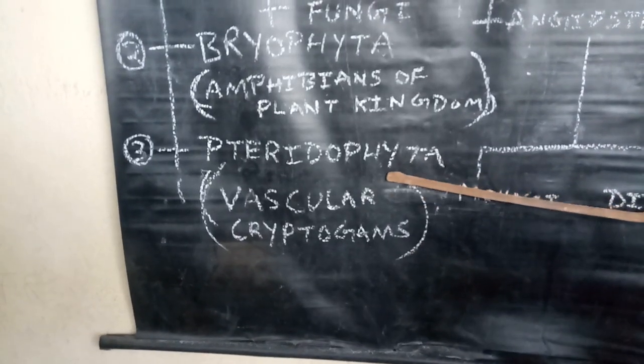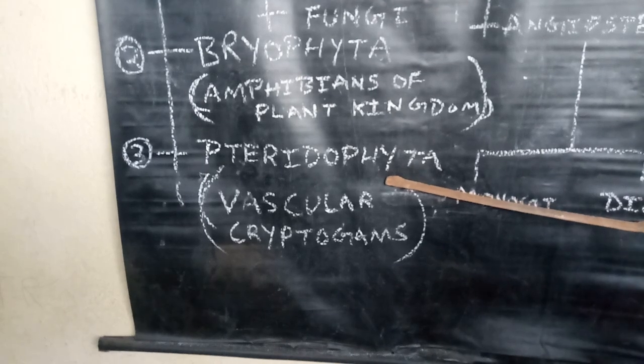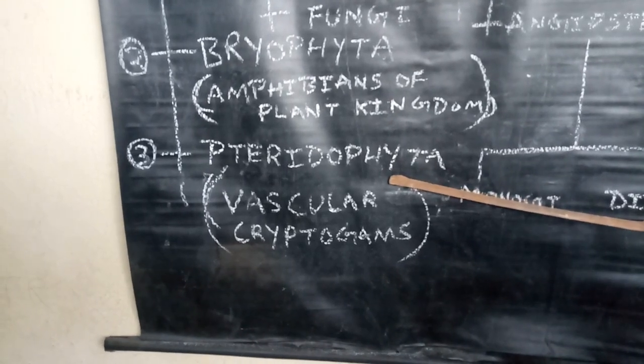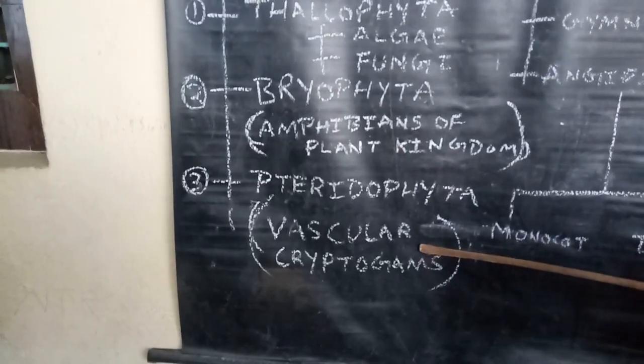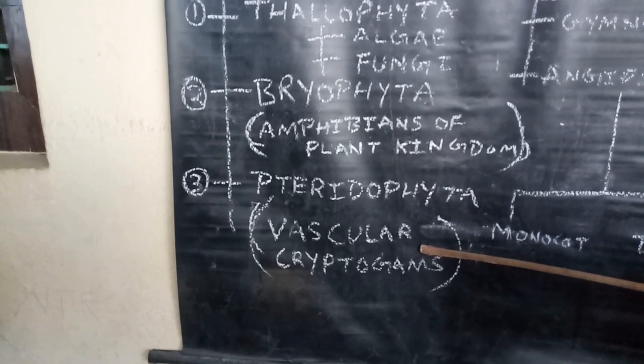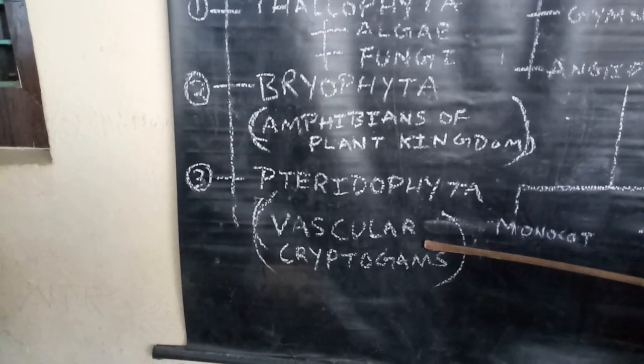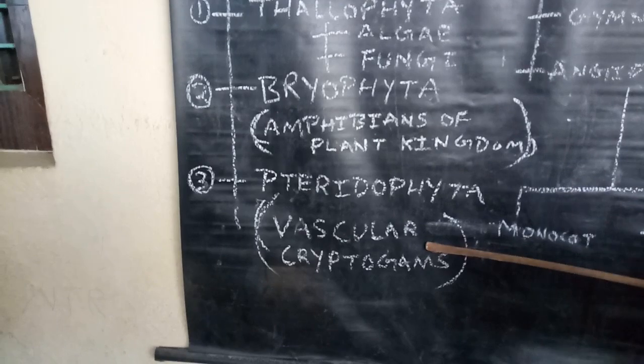Pteridophyta is similar to Bryophyta except they are tracheophytic cryptogames. Tracheophytic means with vascular tissue, hence also called vascular cryptogames.